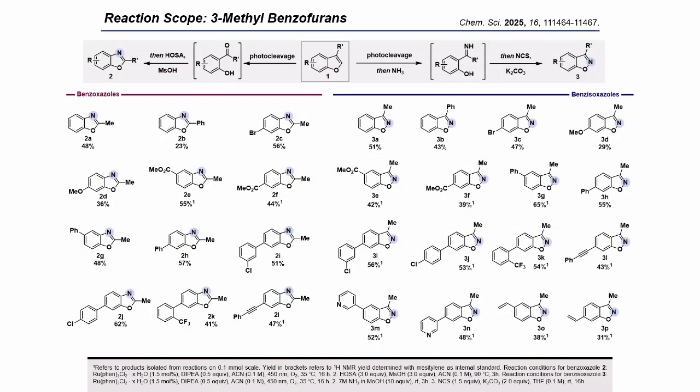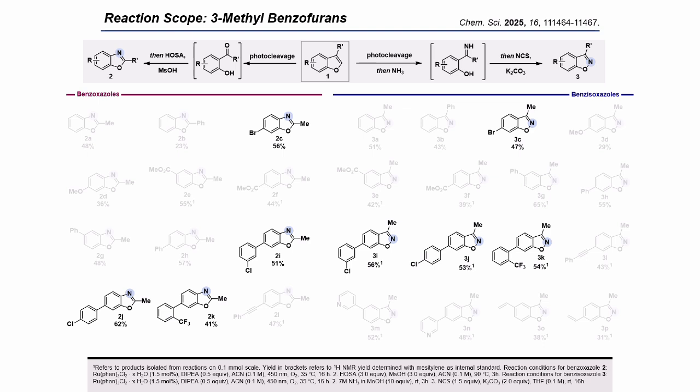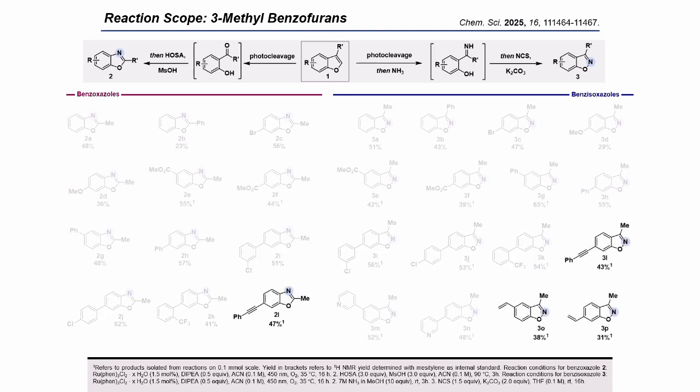With the optimized conditions in hand, we combined both steps — the oxidative cleavage and the cyclization — and studied the functional group tolerance of our method. Electron-withdrawing and donating groups in the 5- and 6-positions were well tolerated, as showcased by the successful conversion of substrates 1c to 1n. Halogens such as fluoro, chloro, and bromo substituents performed well for both benzoxazol and benzisoxazol formation. Alkenes or alkynes remained untouched, giving the desired products in good yields. The initial oxidative cleavage also tolerated 3-phenyl-substituted benzofurins, though the comparatively low yield for benzoxazol 2b was assigned to competition in migration between the 2-hydroxybenzene ring and the phenyl group in the Beckmann rearrangement. In contrast, benzisoxazol 3b formation was not influenced.